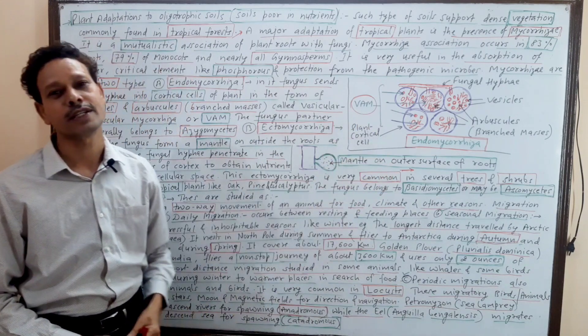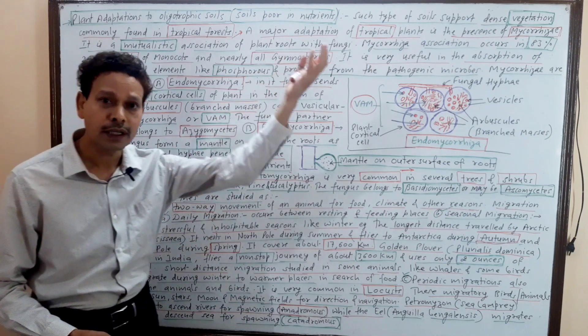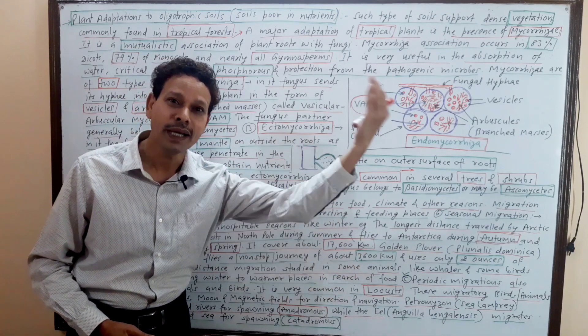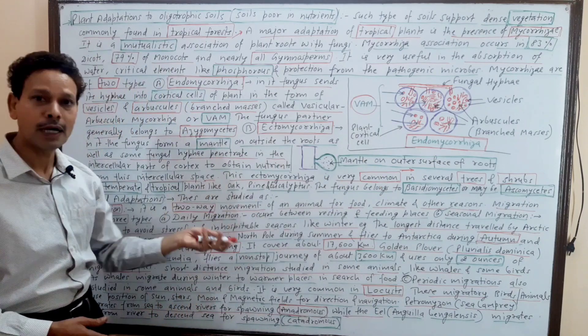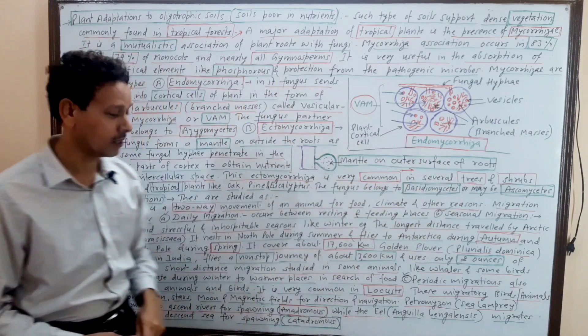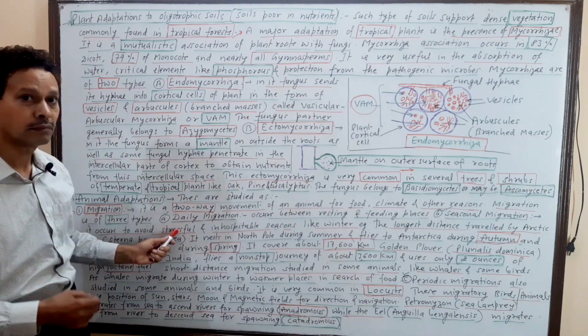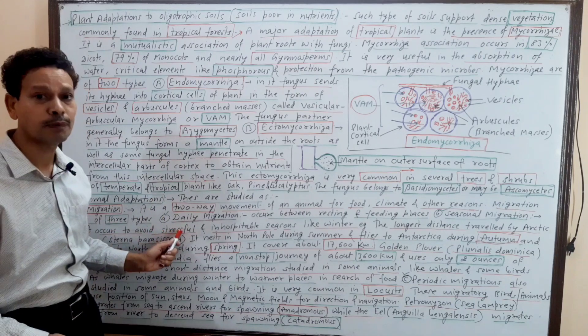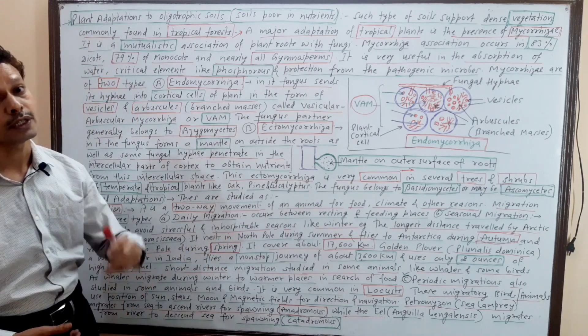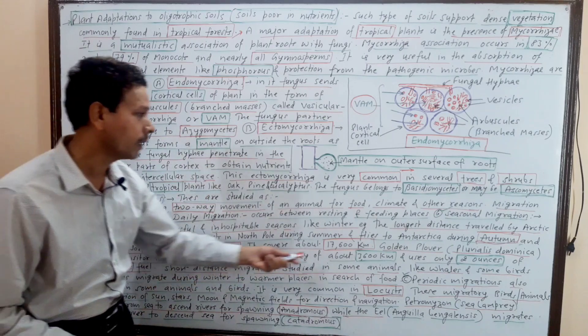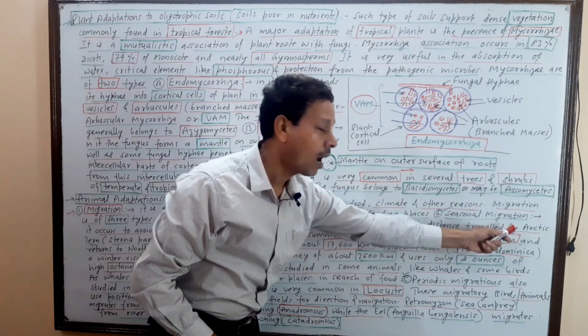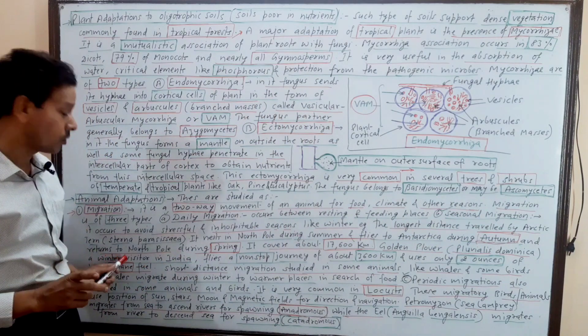These migrations may be short distance or long distance. Daily migrations occur in our surroundings. Seasonal migrations - it occurs in a particular season which is stressful, inhospitable, with stress conditions and adverse conditions.